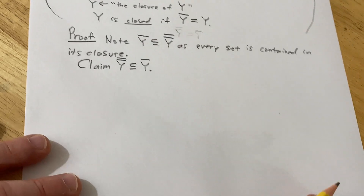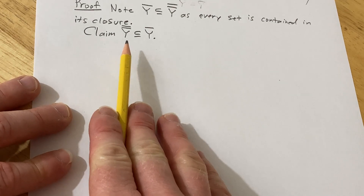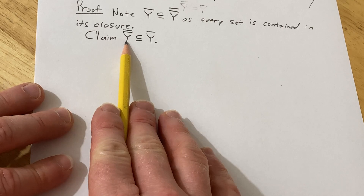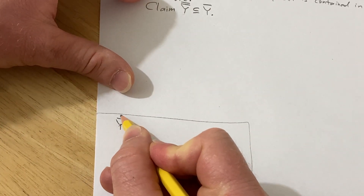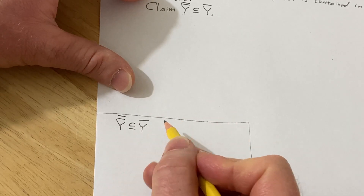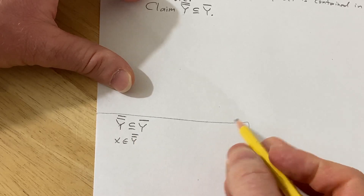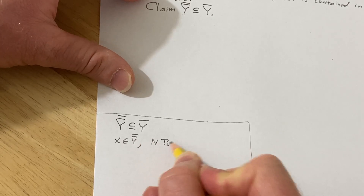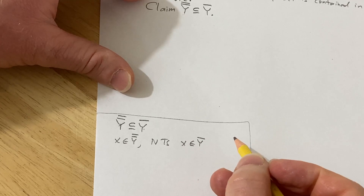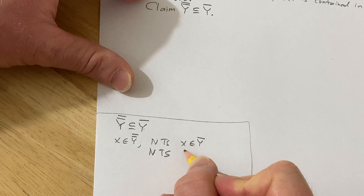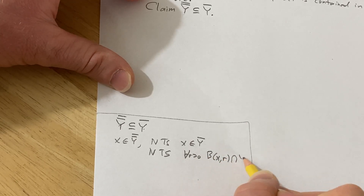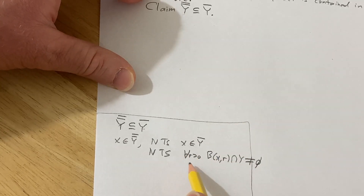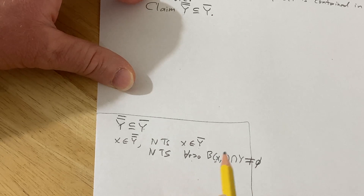Let's do some scratch work to motivate what's happening. We're trying to show that closure(closure(Y)) is contained in closure(Y). We take an element x here, and we need to show this element is in closure(Y). That means we need to show x is adherent to Y — so for all r greater than 0, the open ball centered at x of radius r intersected with Y is not empty. If we can show that, then x is adherent to Y, so x is in the closure of Y, and that completes the inclusion.